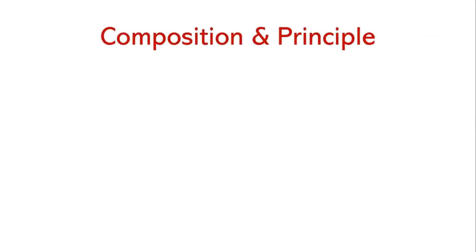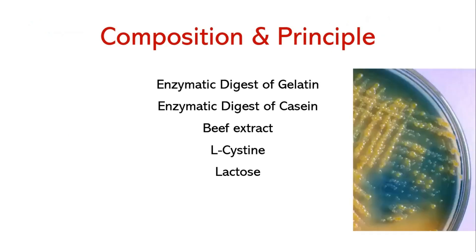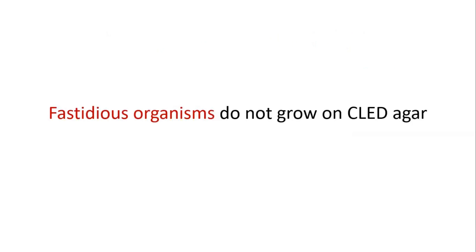CLED agar includes enzymatic digest of casein, enzymatic digest of gelatin, and beef extract providing nitrogen, vitamins, minerals, and amino acids for growth. L-cysteine supports the growth of cysteine-dependent dwarf coliform colonies. Lactose is the fermentable carbohydrate providing carbon and energy. Organisms that ferment lactose lower the pH and change the color from green to yellow, indicated by the pH indicator bromothymol blue. Agar is the solidifying agent. Fastidious organisms such as Neisseria, Gardnerella, and Chlamydia do not grow on this agar.